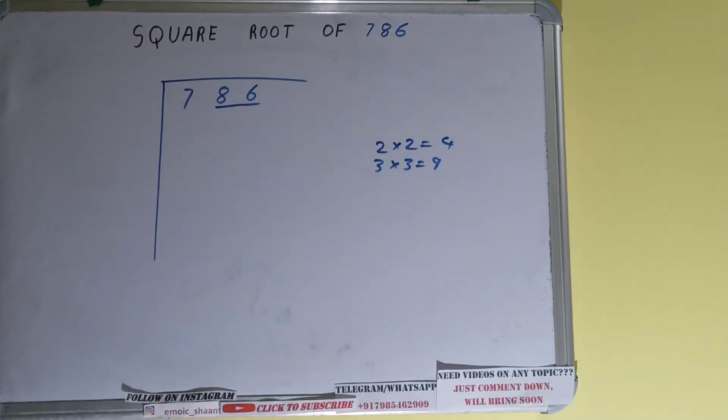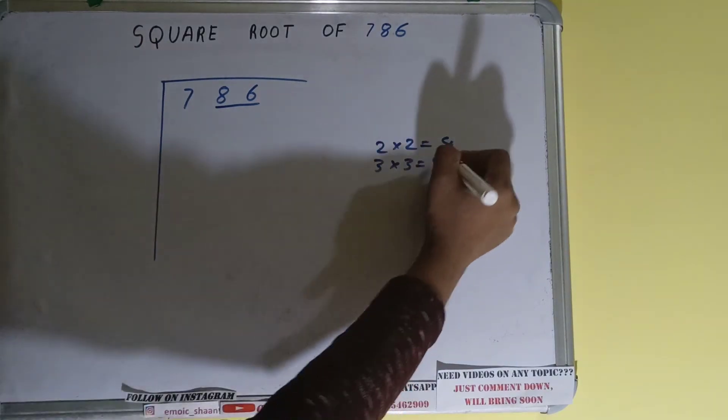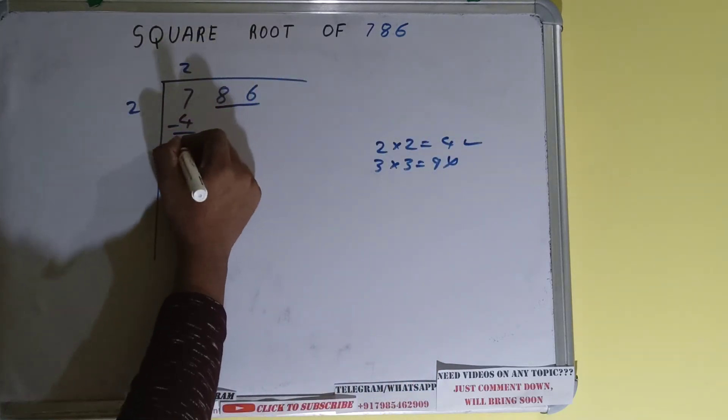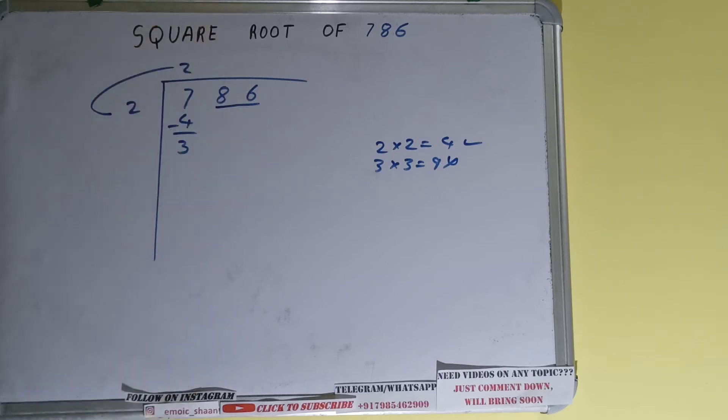9 we cannot use because it is greater than 7, so we have to use this 4. So 2 here and 2 here will be 4. Subtract and 3 will be left. Now we did 2 into 2 right, so do 2 plus 2, it will be 4 and keep one digit extra.